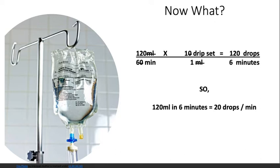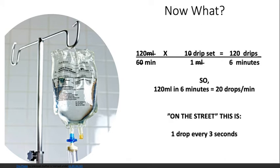If we had a medication pump we could just type in 20 drops per minute, but since we don't have that available, we'll use the drip chamber and roller clamp to dial it in. To make this even easier, we figure out drops per second or per two to three seconds. 20 drops per minute means 60 ÷ 20 = 3, so on the street we want one drop every three seconds. We'll use the roller clamp, watch the drip chamber, and aim for one drop about every three seconds.